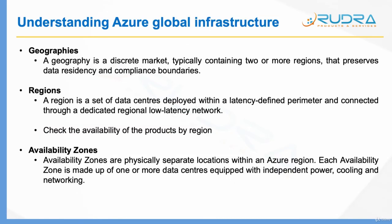Let me take you through a bit more on the terminology. A geography is a discrete market that typically contains two or more regions that preserves data residency and compliance boundaries. A region is a set of data centers deployed within a latency-defined perimeter and connected through a dedicated regional low-latency network. Any services within a region can communicate using that low-latency network, so if you have two components that form part of a solution, make sure they are deployed within the same region if the connectivity between them is critical for the business.